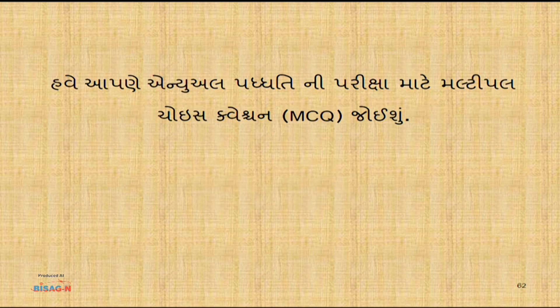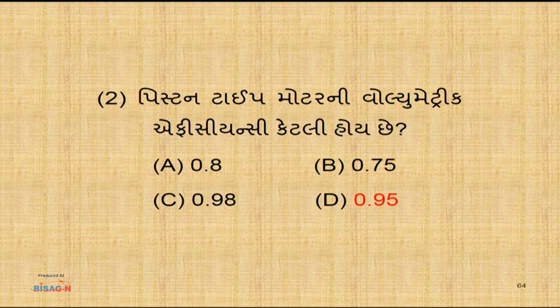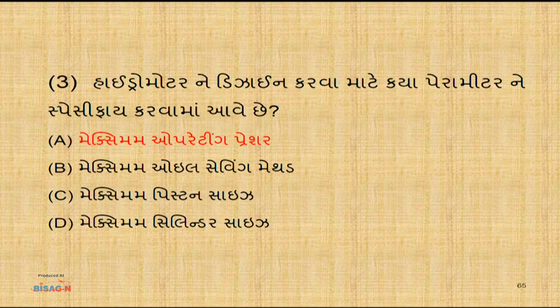હવે આ lesson માંથી MCQ type questions જોઈએ - પરીક્ષામાં પૂછાઈ શકે. પ્રથમ question: આકૃતિમાં X ભાગ (single acting cylinder) - X તરીકે દર્શાવ્યો ભાગ piston છે - ચાર options માંથી જવાબ 'piston' આવે. બીજો question: Piston type motor design કરવા maximum operating pressure - parameter specify કરવામાં આવે - maximum operating pressure પર hydraulic motor ની design કરી શકાય.